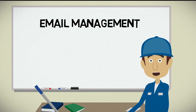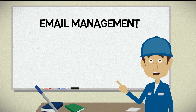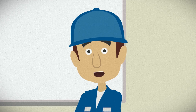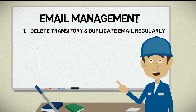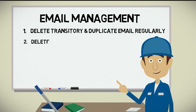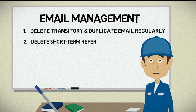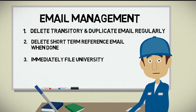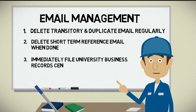Now that you are familiar with the different types of email, here are some tips on how to manage email. As long as there are no active legal or FIPA requests, you should: 1. Delete transitory email regularly, at the end of each day. 2. Delete short-term reference email weekly, or when you no longer require the information. 3. File university business records centrally immediately and delete from your inbox or sent items.